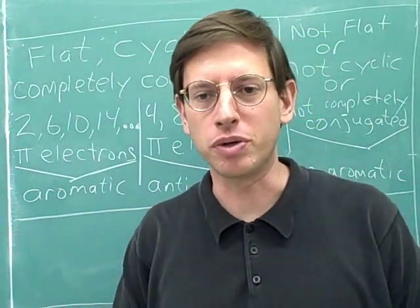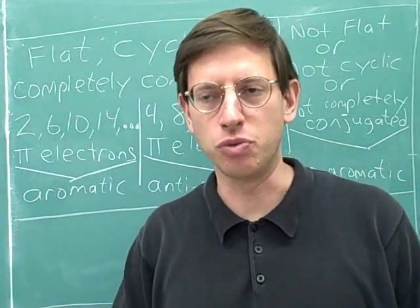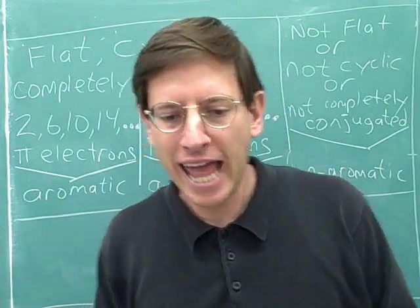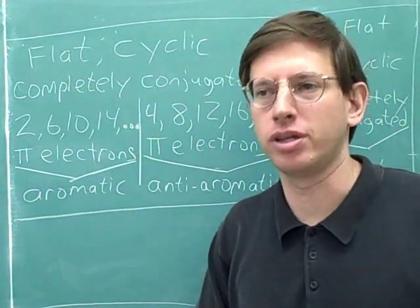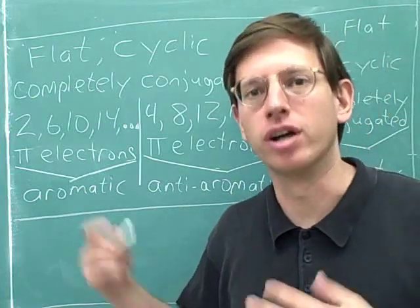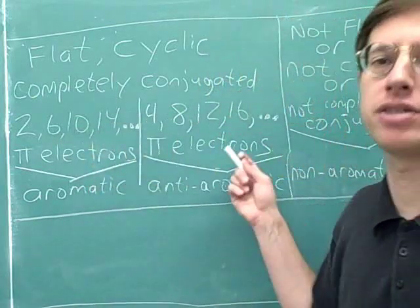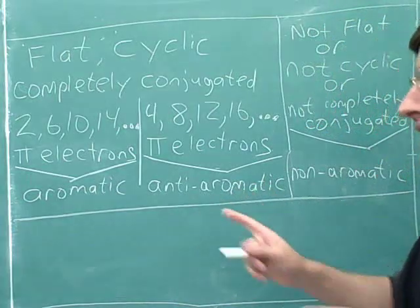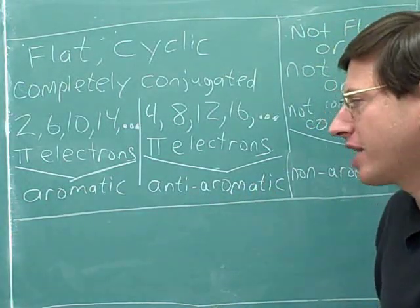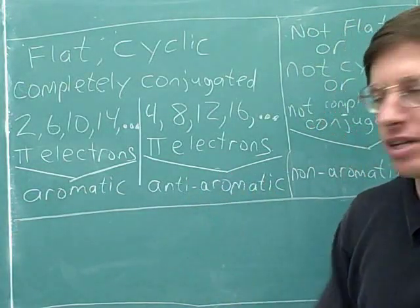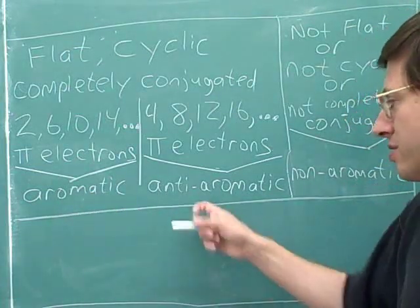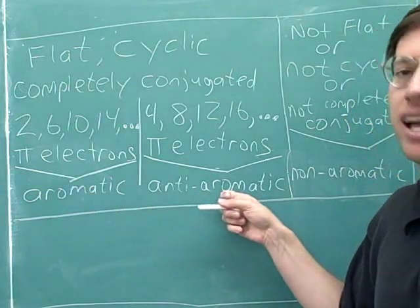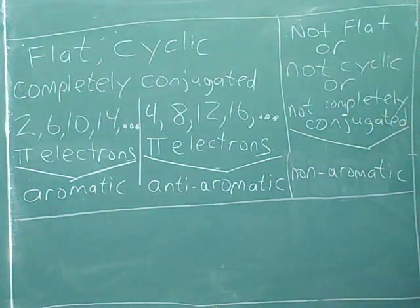Now we're finally ready to get down to what our goal was all along: to review how you can determine whether a molecule is aromatic or not. Here are the basic rules. There are actually three different categories: some molecules are aromatic, some molecules are called anti-aromatic, and some molecules are called non-aromatic.